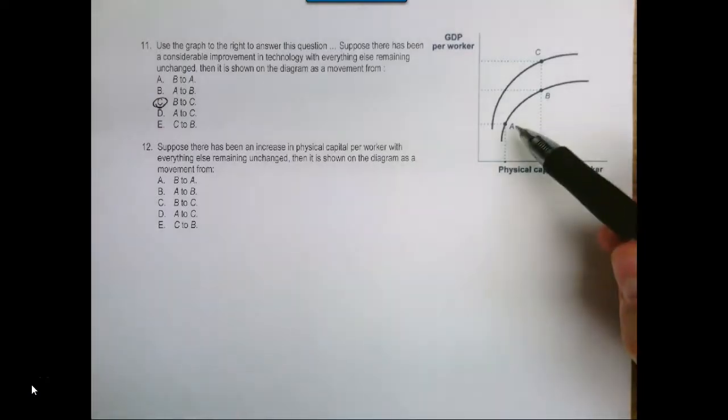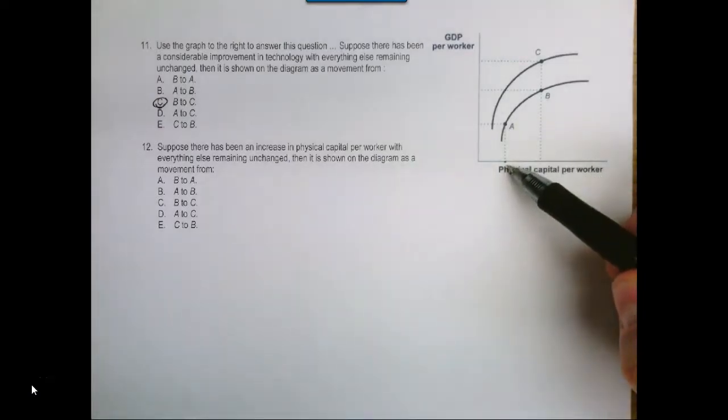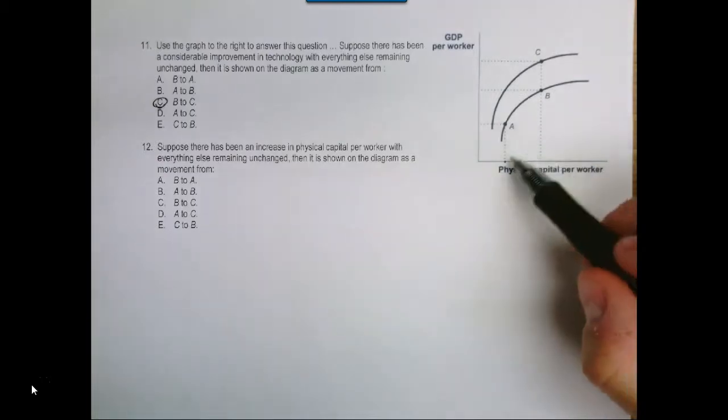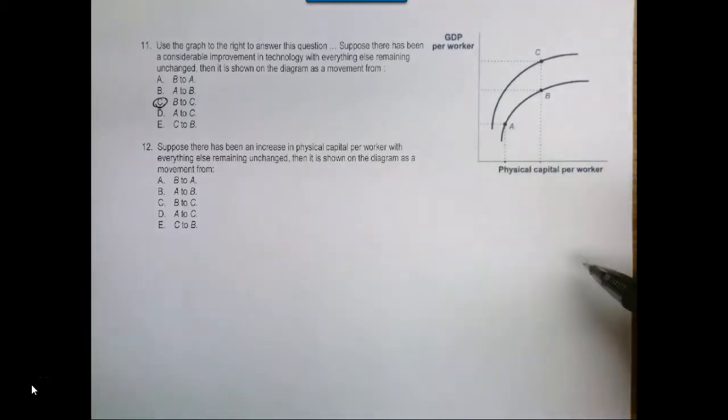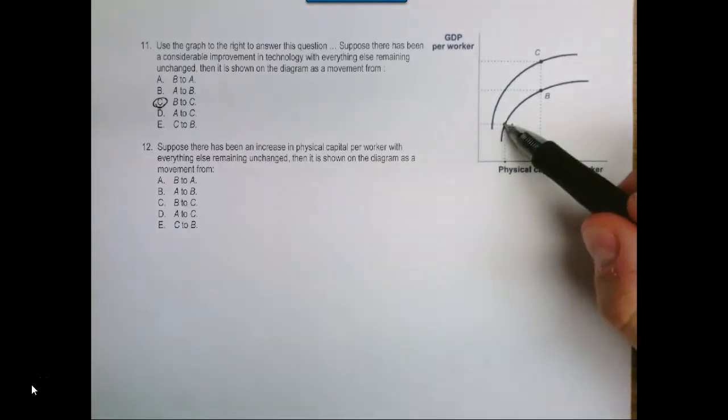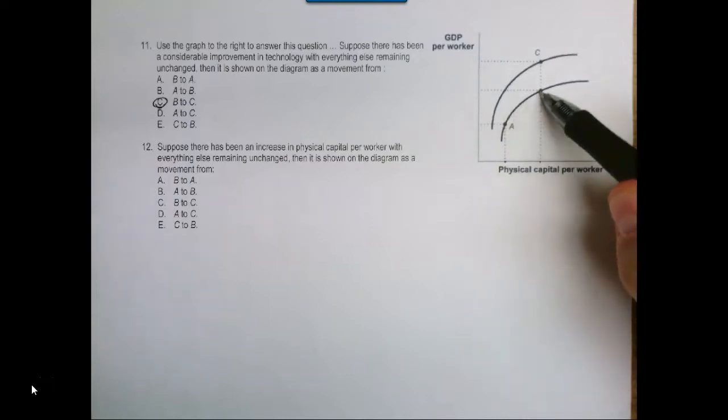So when the amount of physical capital changes, what we're saying is that we had this much before, but now we have this much. So we're just moving from point A to point B along an existing line.